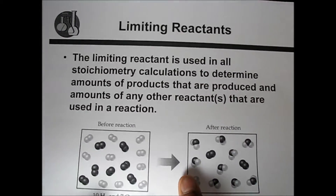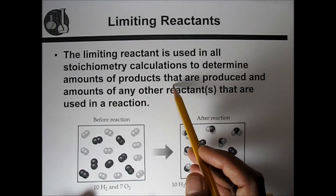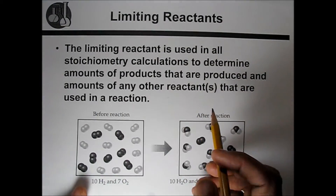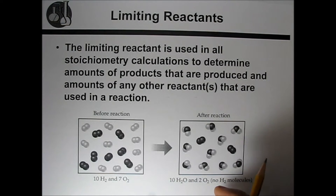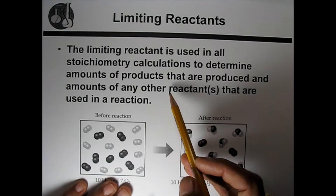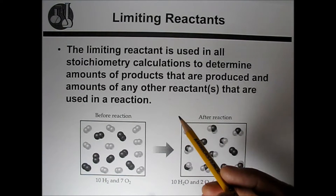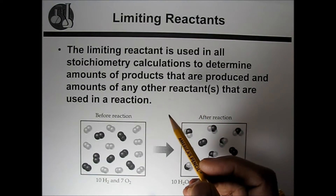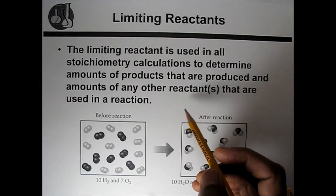The limiting reactant is used in all stoichiometric calculations to determine the amount of product produced and the amount of any other reactant used. In any stoichiometric reaction calculation, we first have to find out what the limiting reactant is, and based on that limiting reactant we find the amount of product. Using the limiting reactant amount we can also find other reagent amounts.